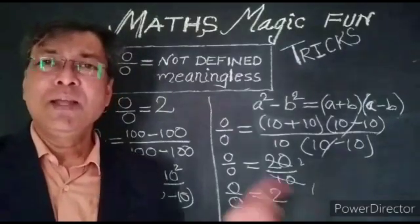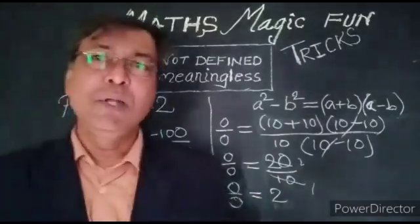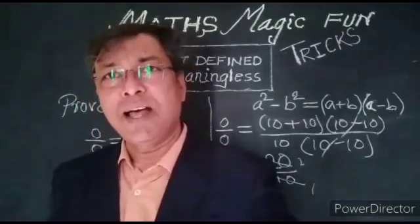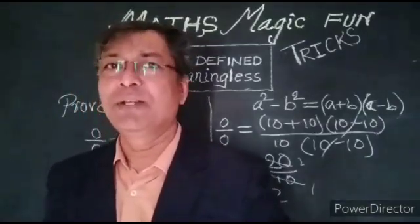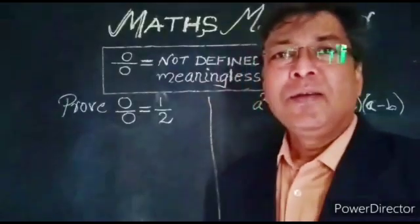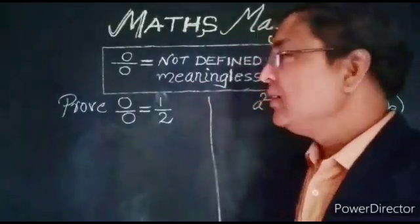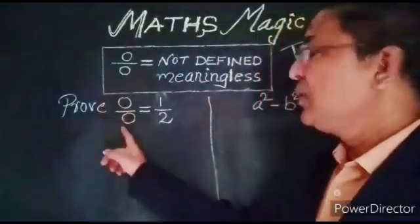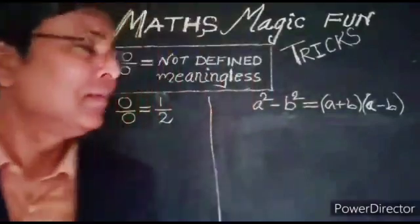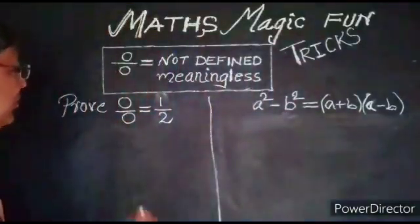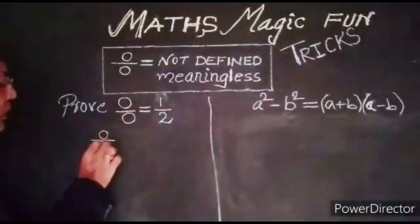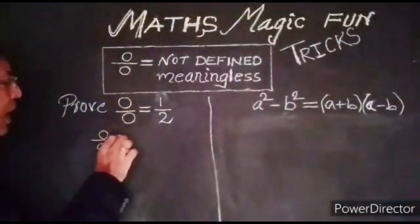Now I will show you how to prove 0 upon 0 is equal to half. Here we go. Prove that 0 upon 0 is equal to half.